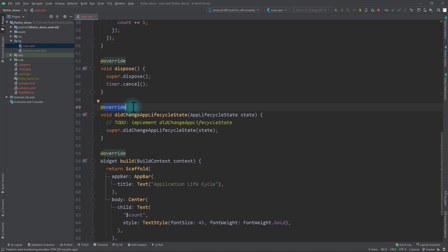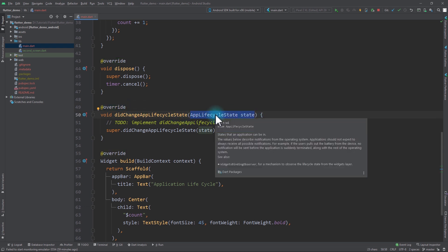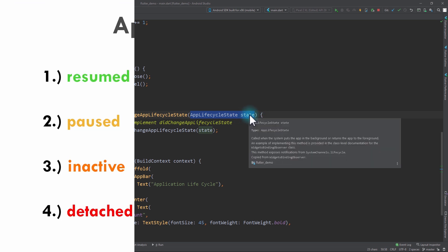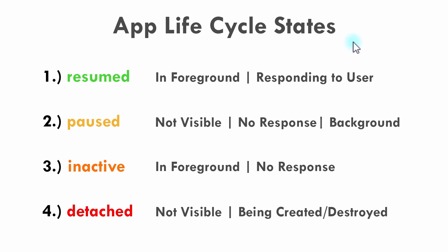We're going to be overriding the didChangeAppLifecycleState function, and in its argument we get the AppLifecycleState enum. There are four possible values for this enum. A particular app screen can go into these four states: resumed, paused, inactive, and detached. In the resumed state the app is in the foreground, visible to the user, and responding to user input. In the paused state the application is minimized, not visible to the user, and running in the background.